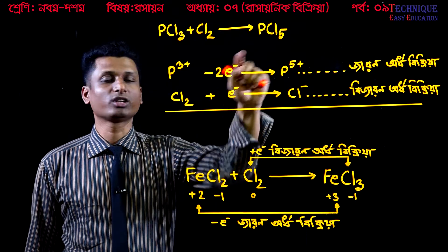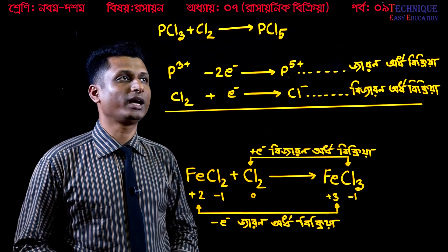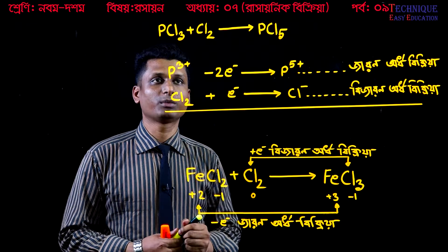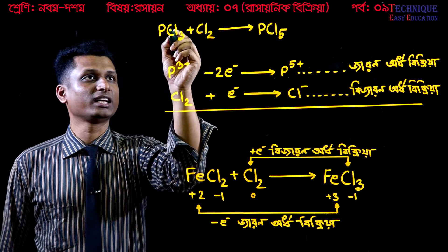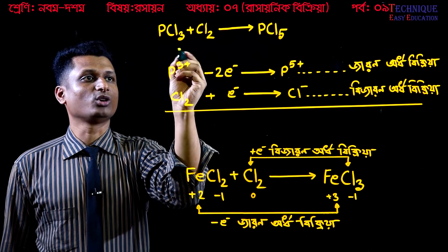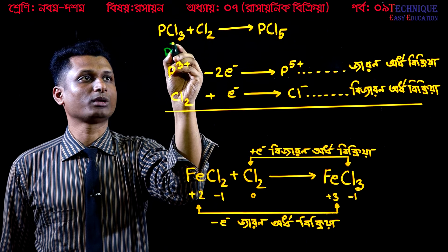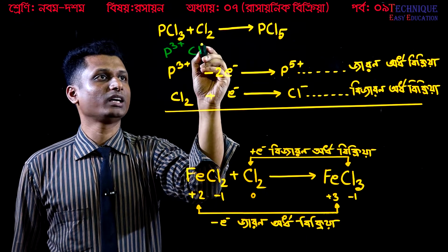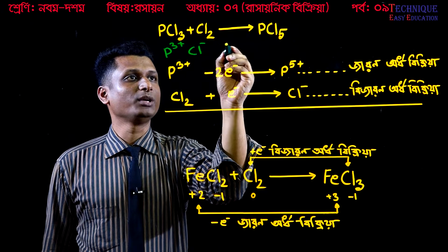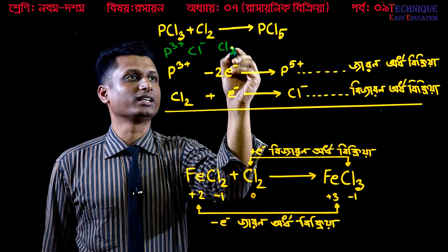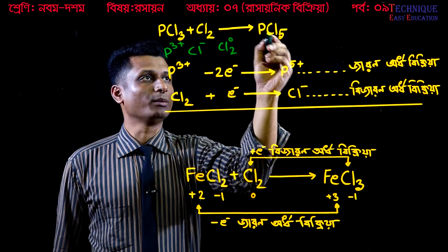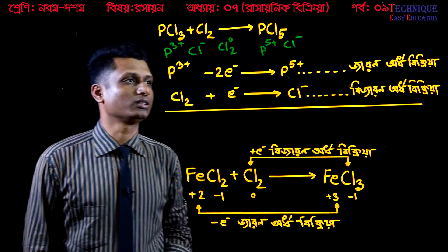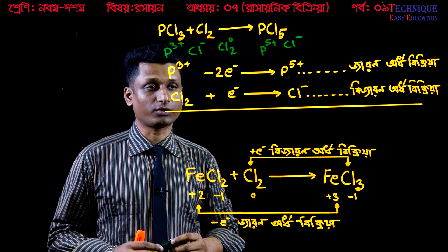Here we are going to learn about phosphorus trichloride and chlorine, and phosphorus pentachloride. In phosphorus trichloride, phosphorus is plus 3 and chlorine is minus 1. In chlorine, the oxidation state is 0. In phosphorus pentachloride, phosphorus is plus 5 and chlorine is minus 1.